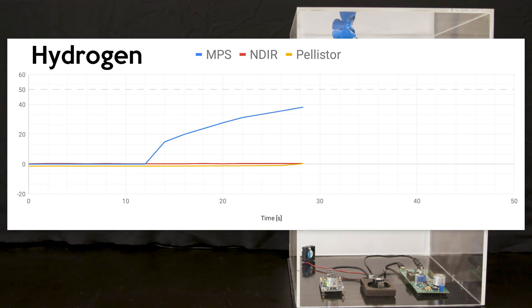the CAT bead under-reports the concentration, and the NDIR is incapable of even seeing hydrogen, and so reports zero.